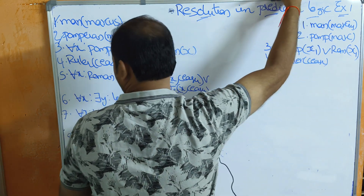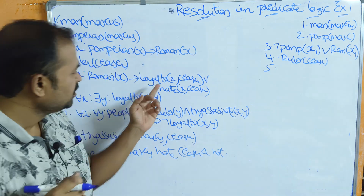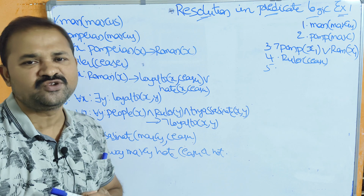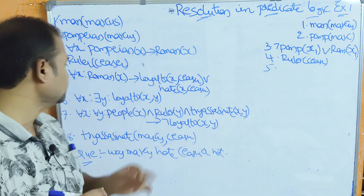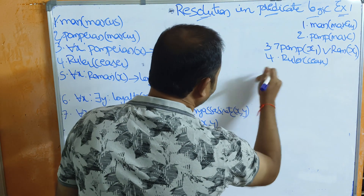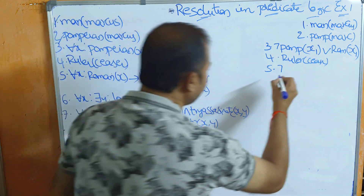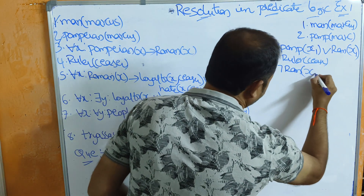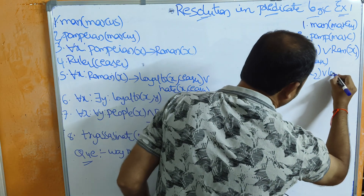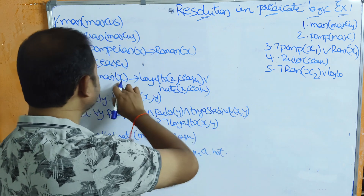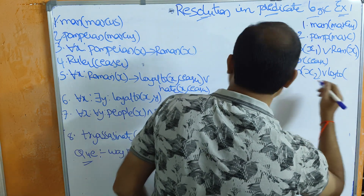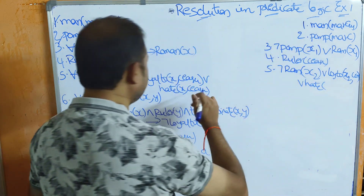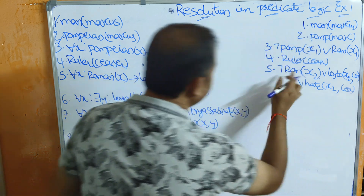The fifth statement is: for all x, roman(x) implies loyal_to(x, caesar) or hate(x, caesar). We have a universal quantifier, so we remove it directly. This is in the form P implies Q, so we write it as negation P or Q, giving: negation roman(x2) or loyal_to(x2, caesar) or hate(x2, caesar). We use x2 as the renamed variable.